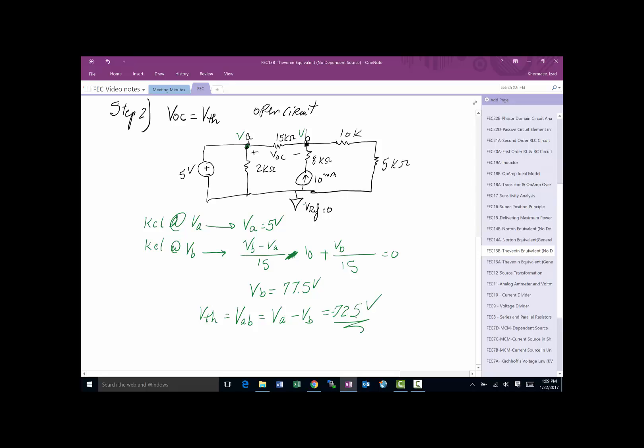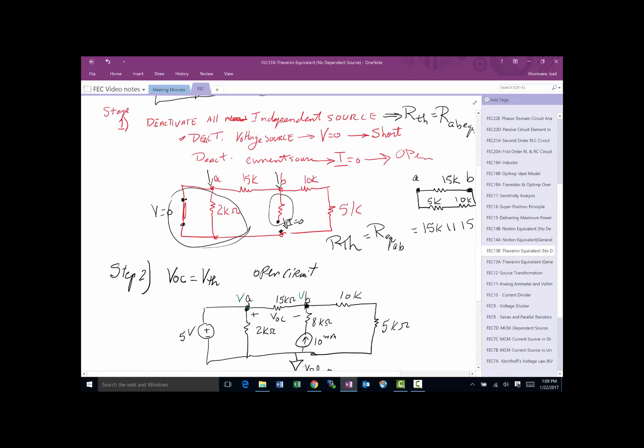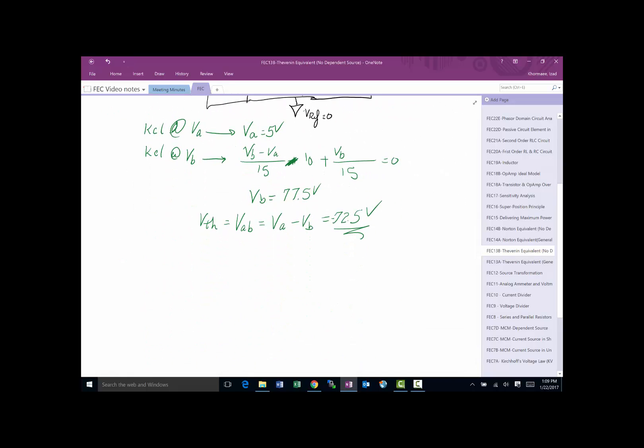So now I have the R Thevenin from step one. I have the V Thevenin from step two. So just finish the job and draw the model. Okay, and that's simply I'll do a V Thevenin right here and the resistor.